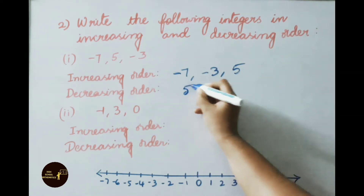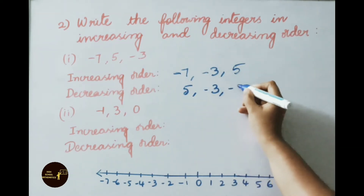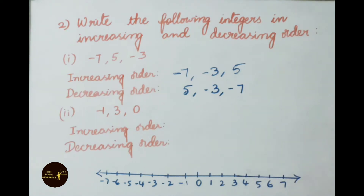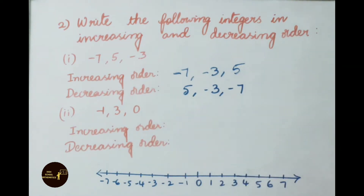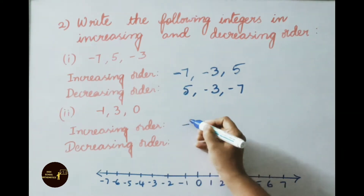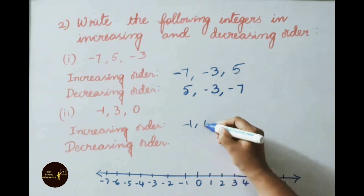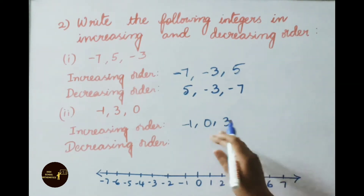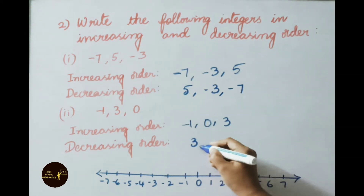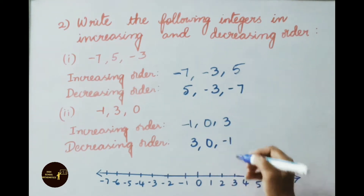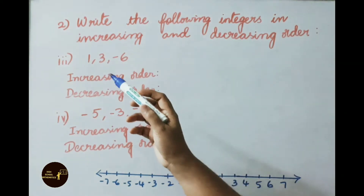Decreasing order means arranging the numbers from big to small, so write in reverse: 5, minus 3, minus 7. That is the decreasing order. For the second set — minus 1, 3, and 0 — observing the number line from left to right, we get minus 1, then 0, then 3. That is the increasing order. The decreasing order is: 3, 0, and minus 1.